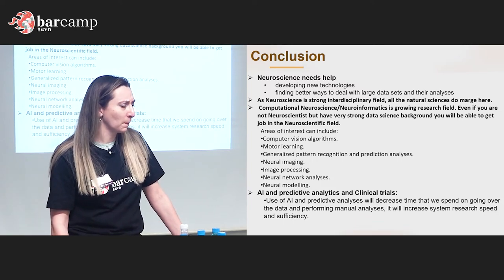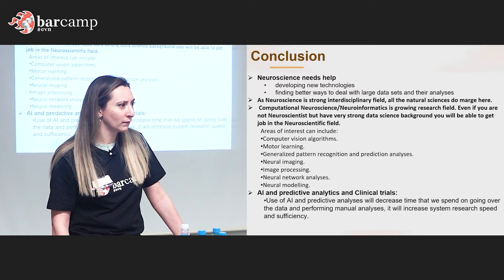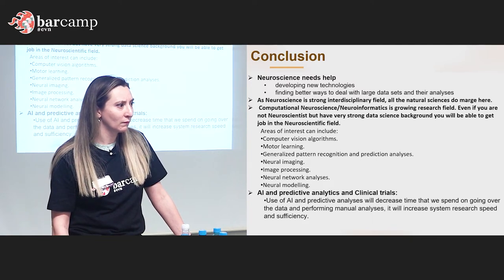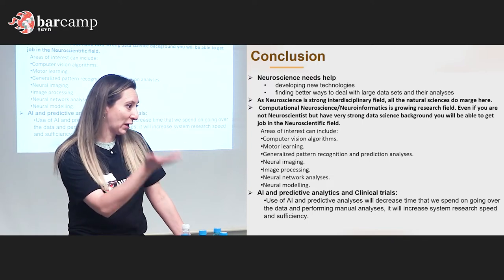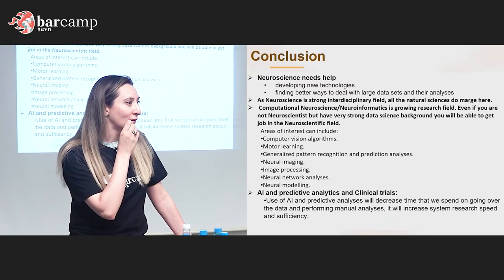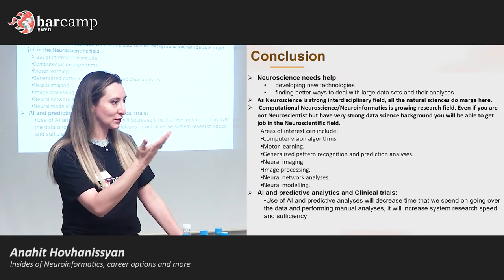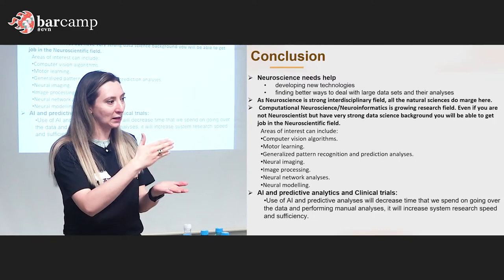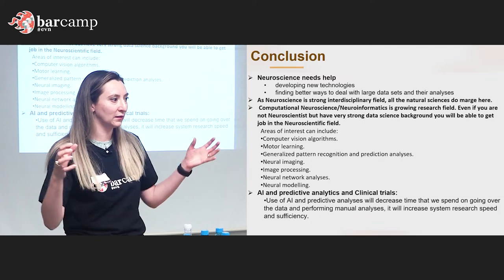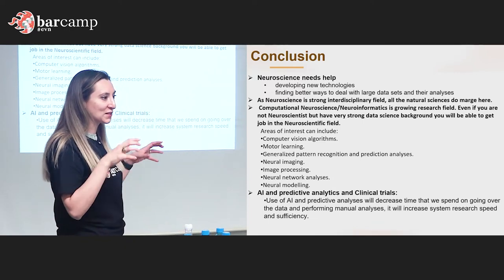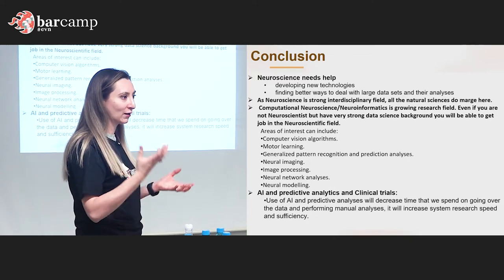Someone suggested it's only a computational problem — that if we have enough computational power we can solve it. But beyond computation, when you are dealing with real data and developing models, you encounter many things that make no sense — pieces of the puzzle that don't come together. That's why in the neuroscientific field we still need lots of data science work to develop correct and reliable algorithms and models.